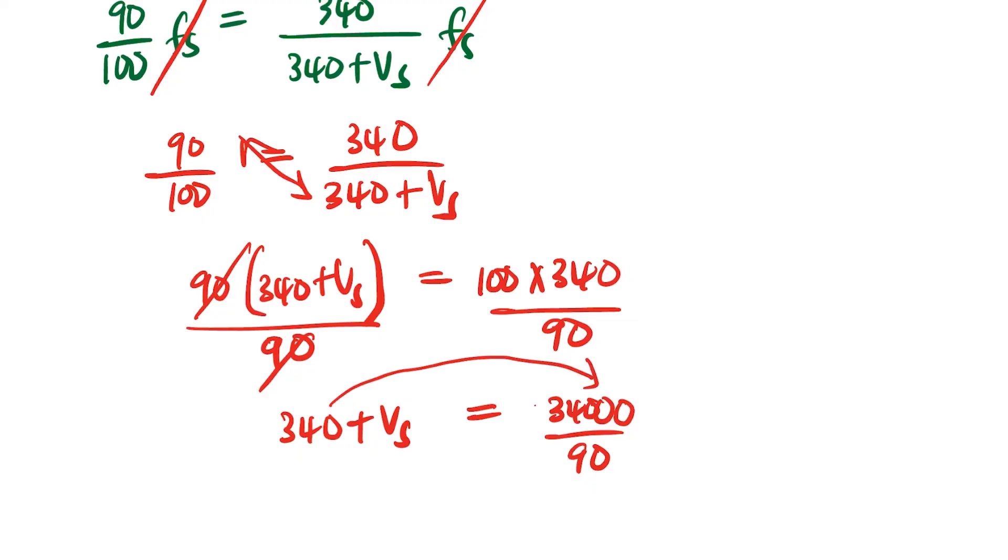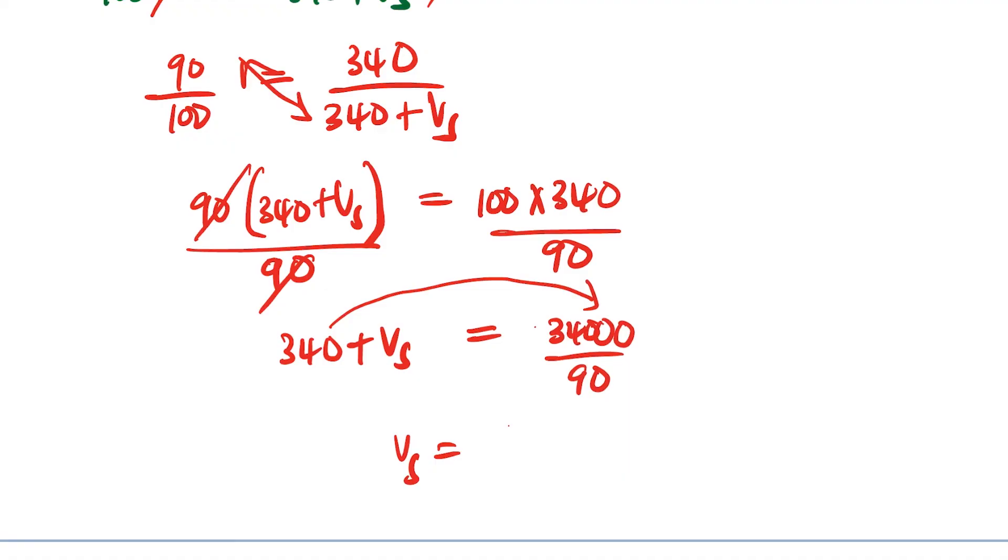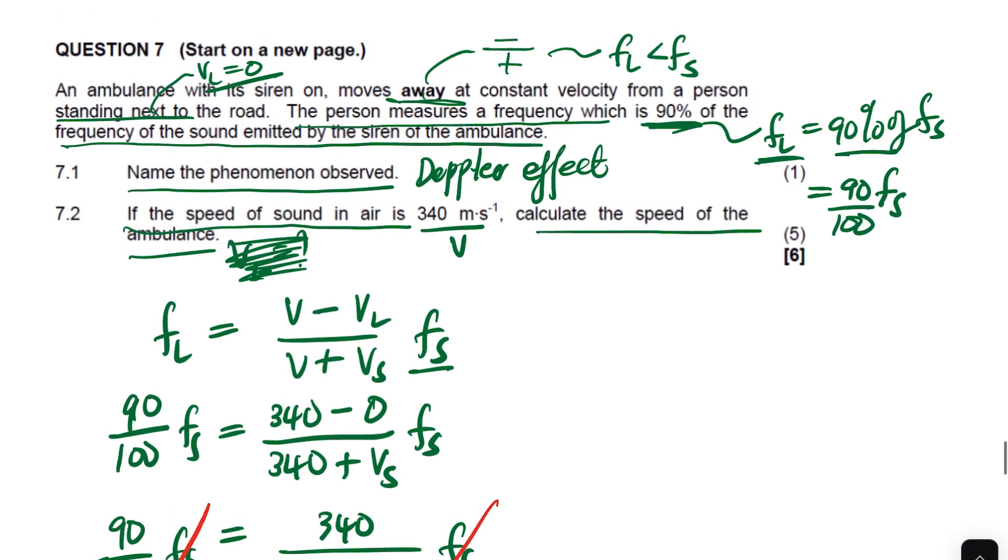And then, we transpose the 340 to that side. So, we'll have the VS is equal to 34,000 divided by 90 minus 340. So, 34,000 divided by 90 minus 340. So, the answer, the answer here, VS is equal to 37.78 meters per second. That's the velocity of the source, velocity of an ambulance.